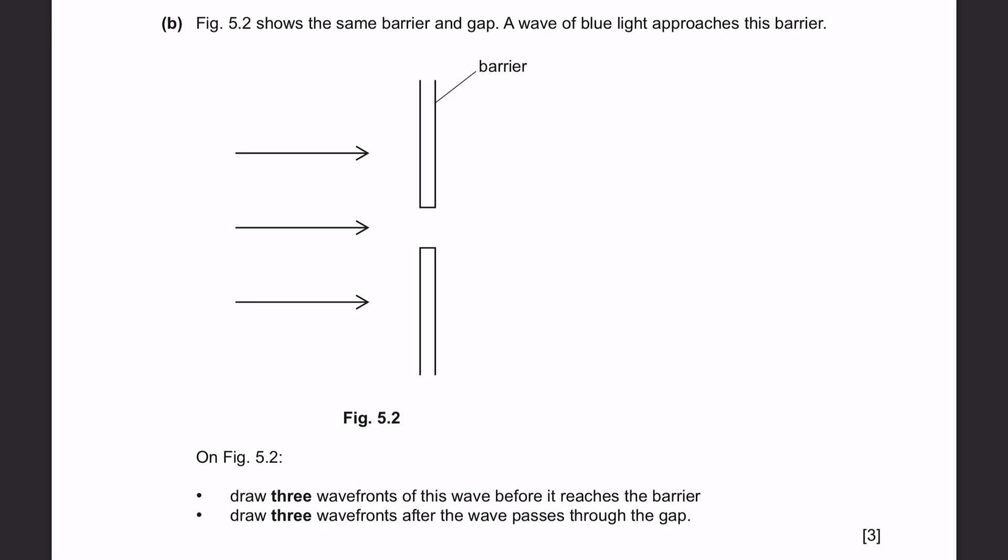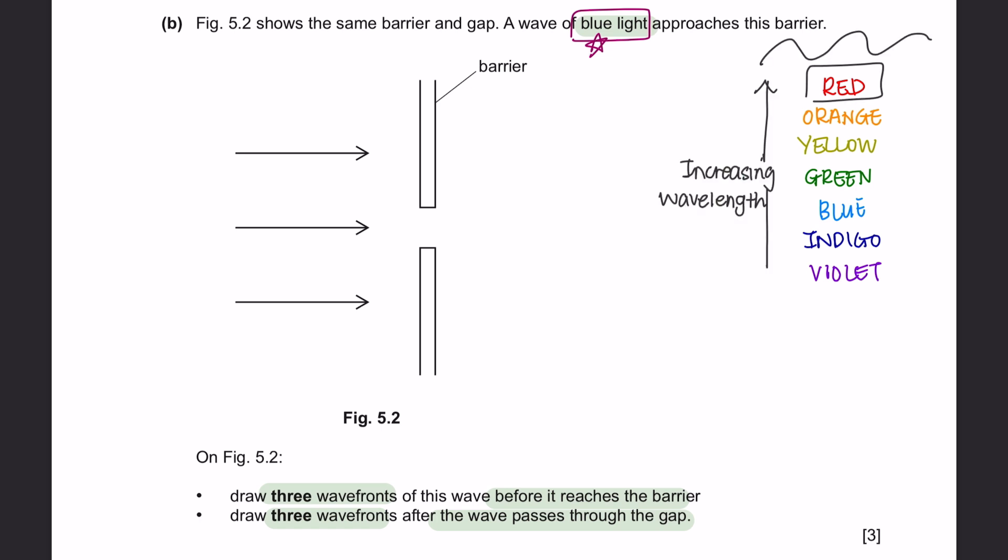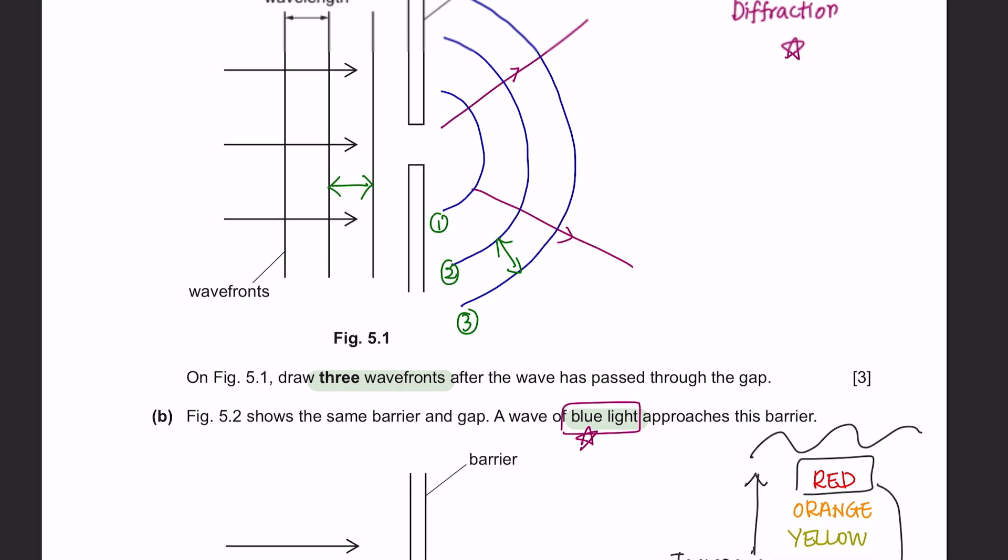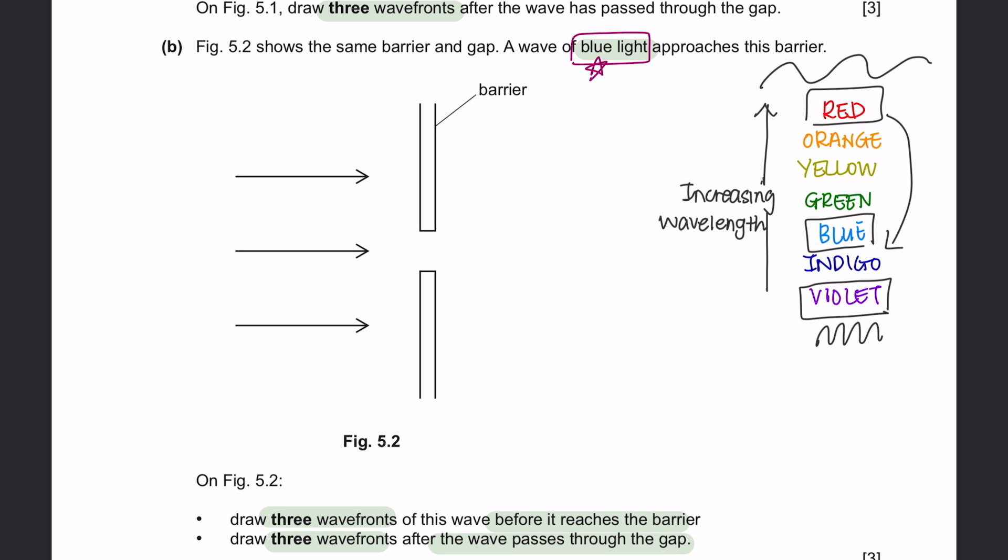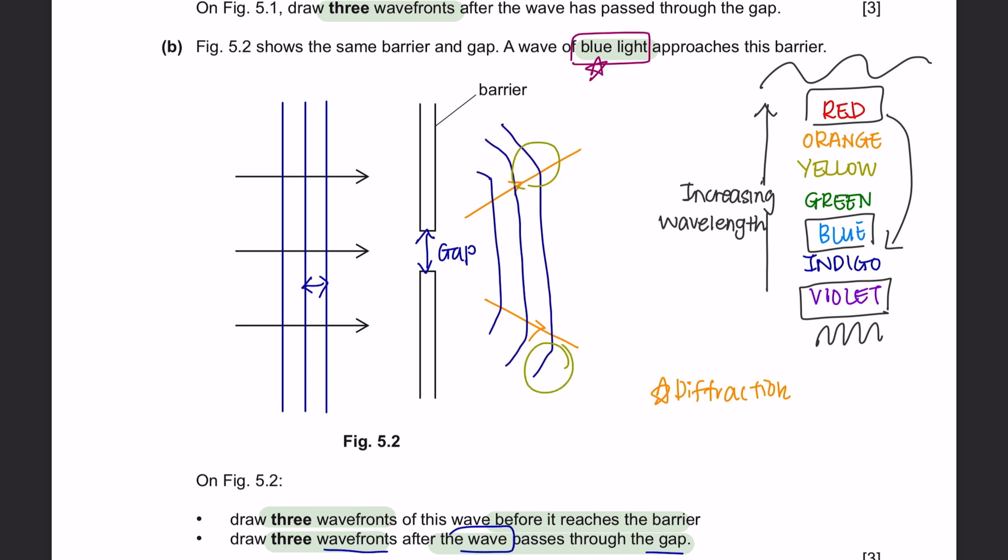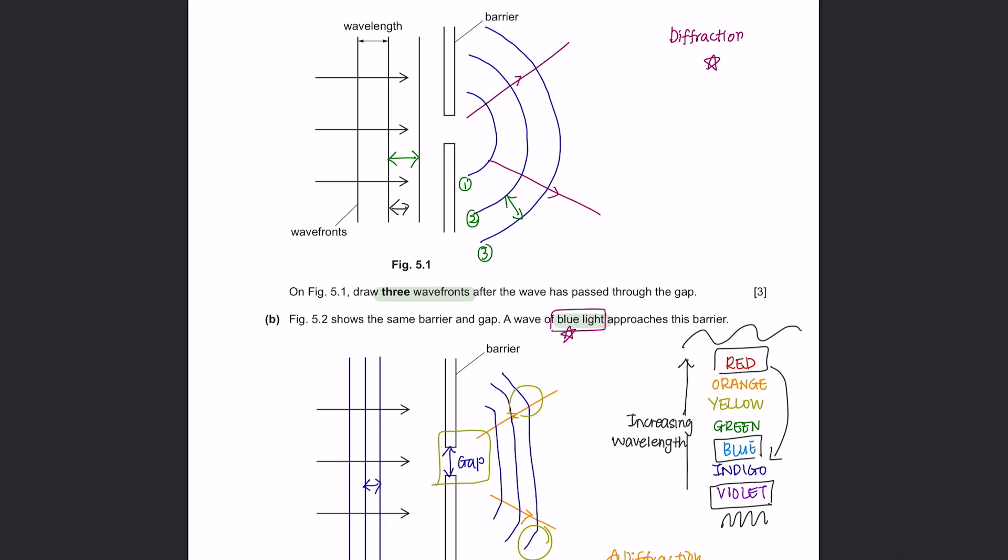Question B. Figure 5.2 shows the same barrier and gap. A wave of blue light approaches this barrier. On figure 5.2, draw 3 wavefronts of this wave before it reaches the barrier and draw 3 wavefronts after the wave passes through the gap. The difference from part A and part B is that previously they were using a red light and right now they are using a blue light. According to the color spectrum, red has the longest wavelength and violet has the shortest wavelength. Since we are using a blue light right now, that means it has a shorter wavelength compared to the previous example. So we are going to draw thinner wavefronts compared to the one before. And now we have to draw another 3 wavefronts after the wave passes through the gap. The only difference is that the size of the gap is larger than the size of the wavelength. So the wavelength after passing through the gap will diverge less than the one previously. So always pay attention to the gap size and the wavelength size.